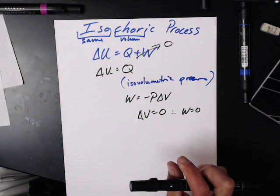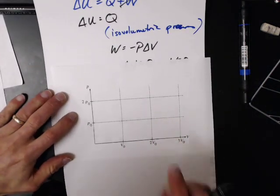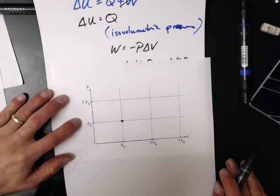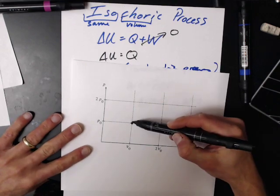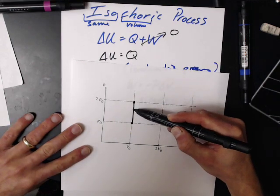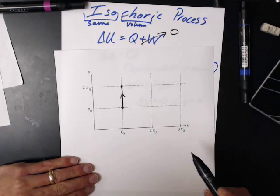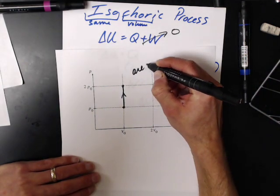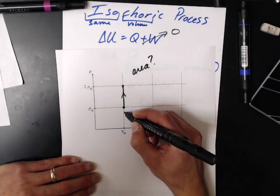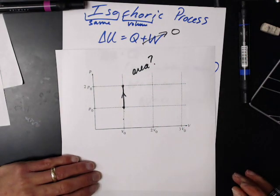What does that look like on a PV diagram? So here's our PV diagram. If I start here at V naught, P naught, and I have an isochoric process, I start here and I can go to here. So here, I went that way. How much work is being done? What's my area under the curve? What's my area? None, since it has no width.